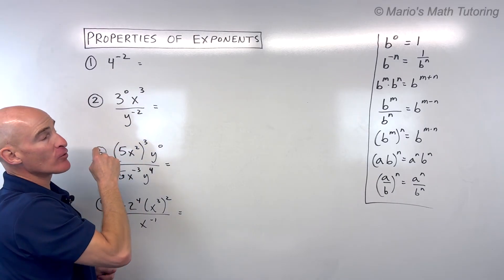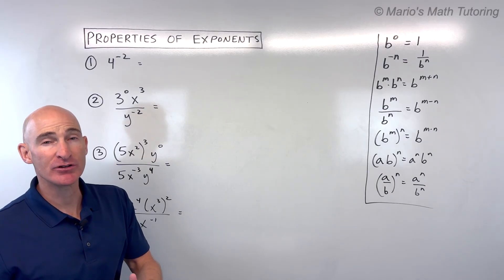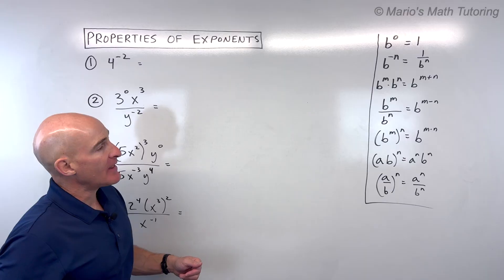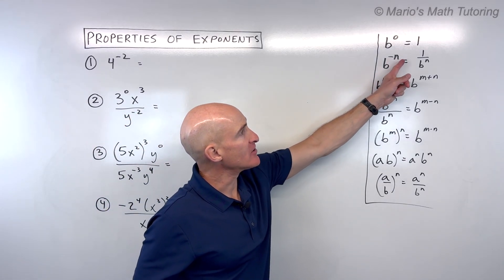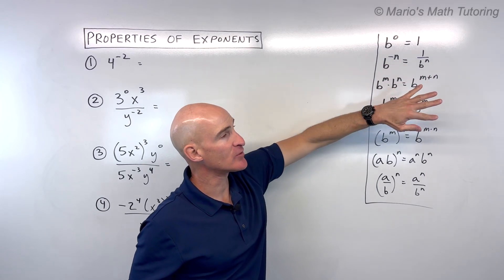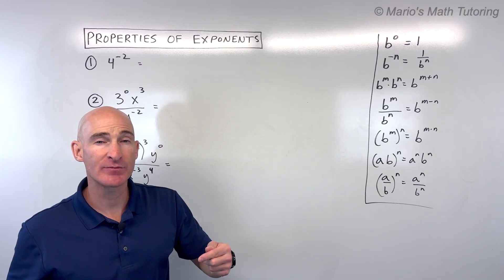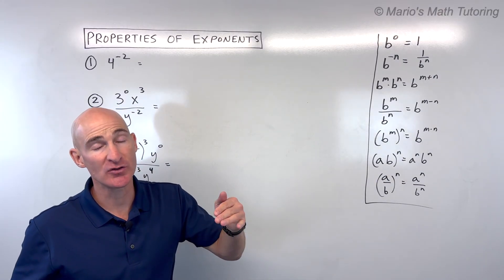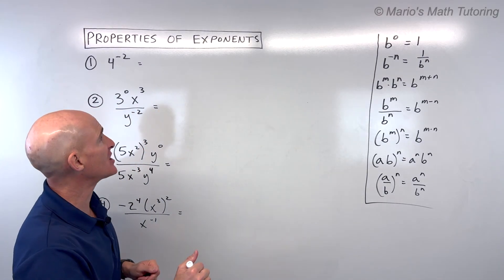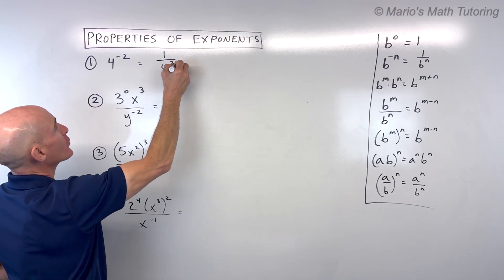How would you simplify 4 to the negative 2 power? The key thing is you want to have positive exponents in your final answer. When you see a negative exponent, that rule tells us to take the reciprocal. This is the base, this is the exponent. The negative means you take the reciprocal, or you move that quantity to the other side of the fraction bar and make it a positive exponent. If it's in the denominator, move it to the numerator; if it's in the numerator, move it to the denominator.